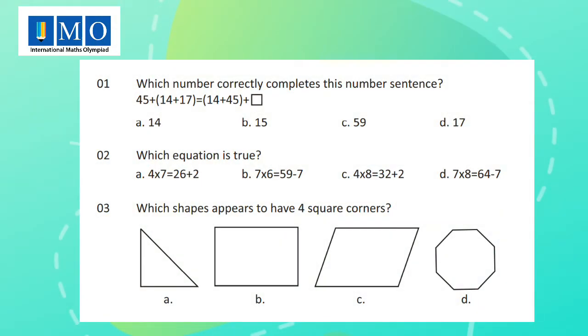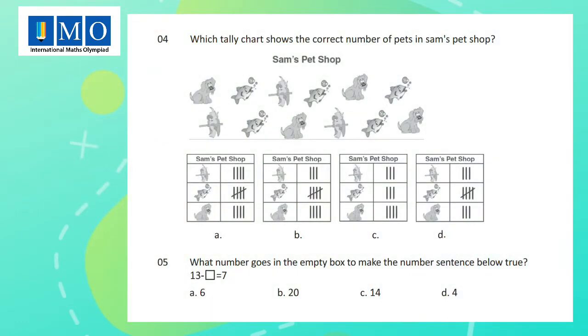Question 1: Which number correctly completes this number sentence? Question 2: Which equation is true? Question 3: Which shapes appear to have four square corners? Question 4: Which tally chart shows the correct number of beds in Sam's Pet Shop?